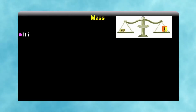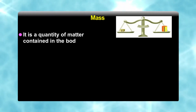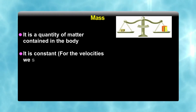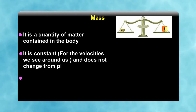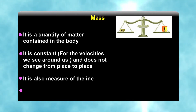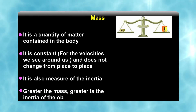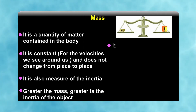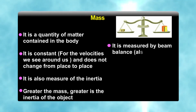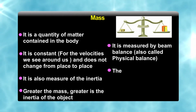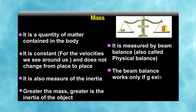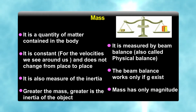Let us talk about mass. Mass is the quantity of matter contained in a body. It is constant and does not change from place to place. It is also a measure of inertia — the greater the mass, the greater the inertia of the object. Mass is measured by a beam balance, also called a physical balance, which works only if acceleration due to gravity exists. Mass has only magnitude.